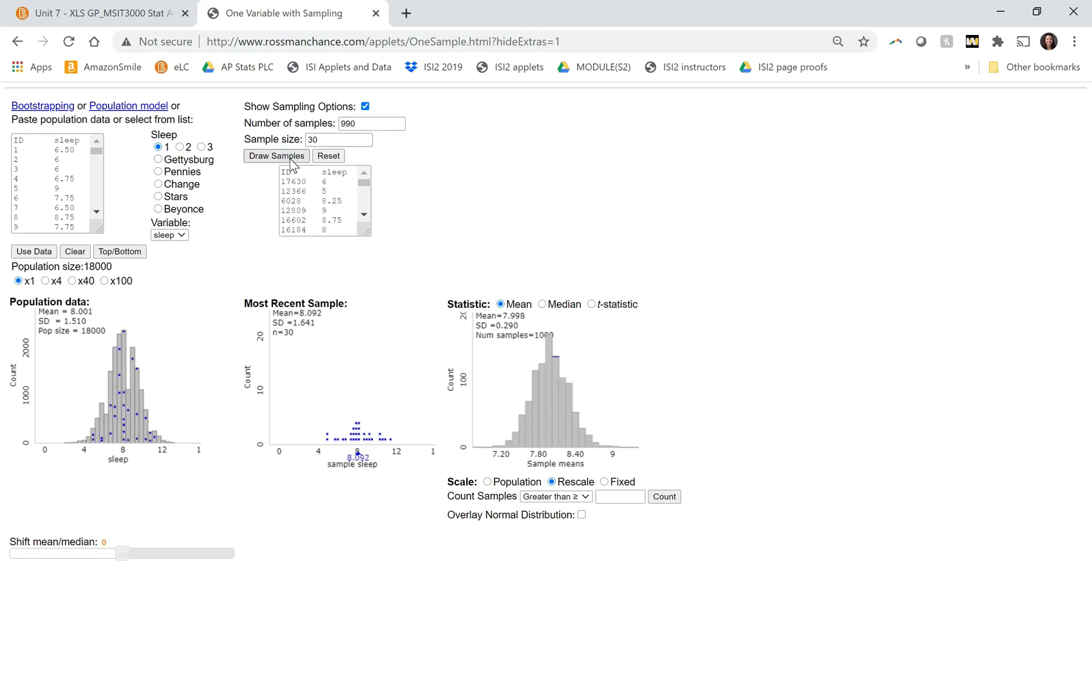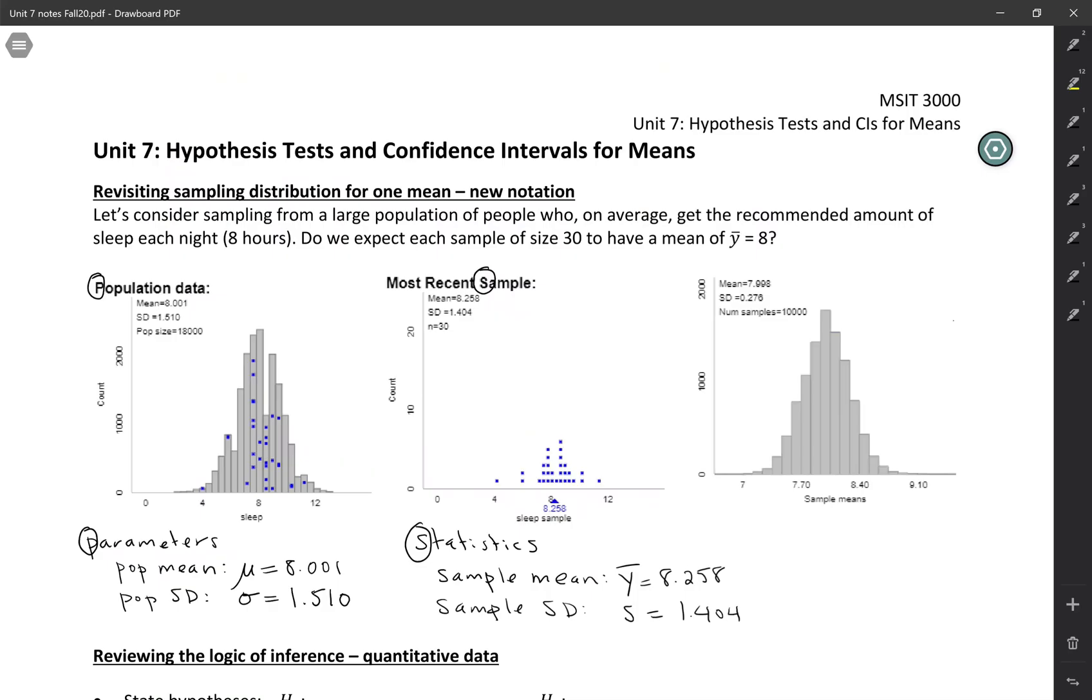So this distribution that we've simulated is called the sampling distribution. So I'm going to label this. This is the sampling distribution. And I know the word sounds very similar to sample, but conceptually it's very different. So what makes the sampling distribution different is that if you think of this as being a distribution made of dots, these are not individual people in their sleep times. These are all sample means. So we use y bar for sample means. So you can think of this as the distribution of all the different sample means that you could get.